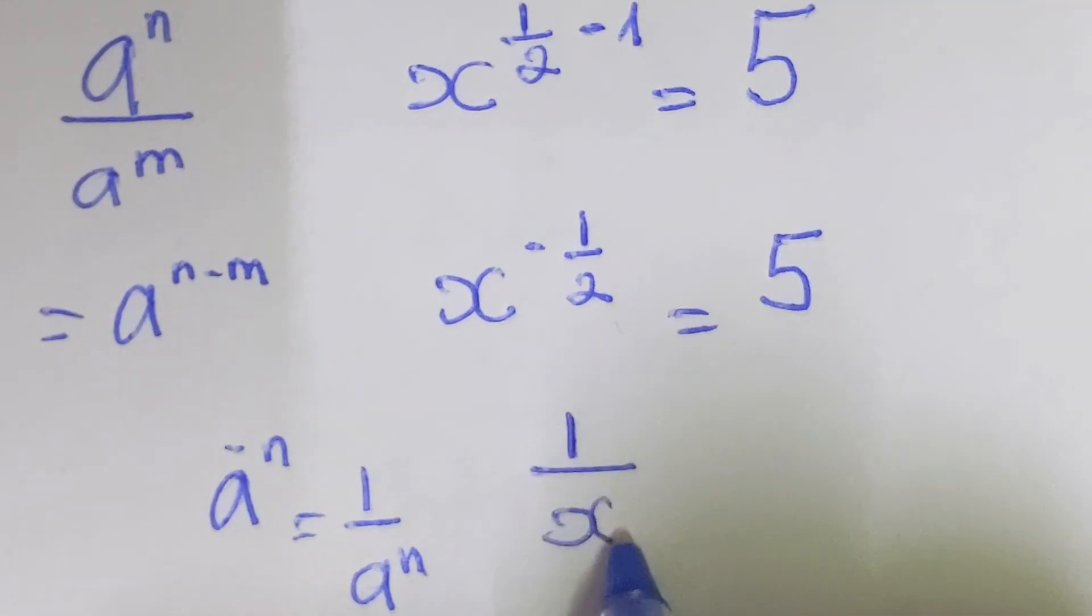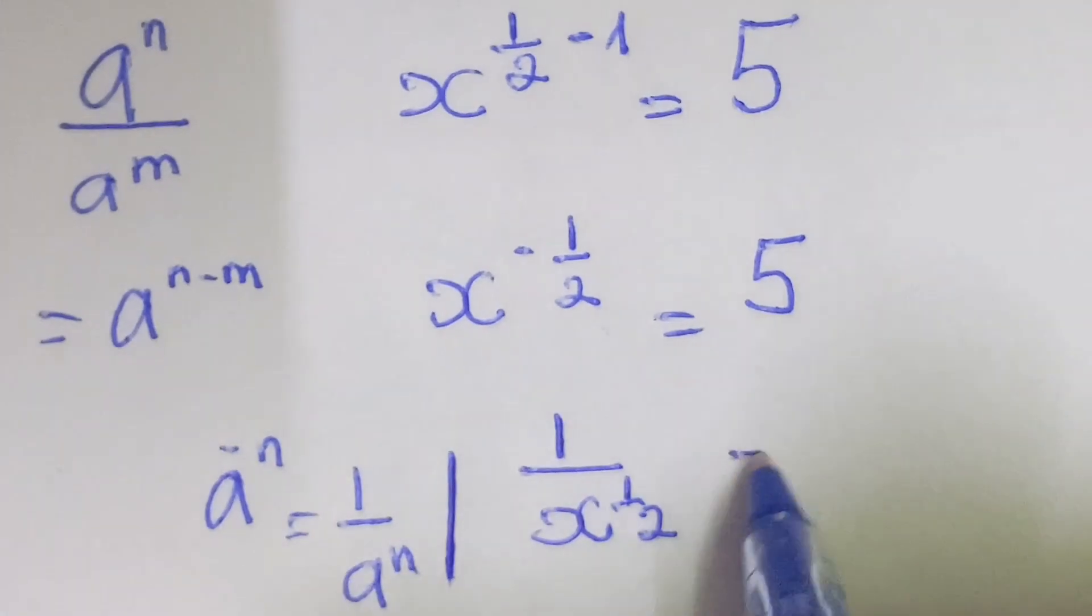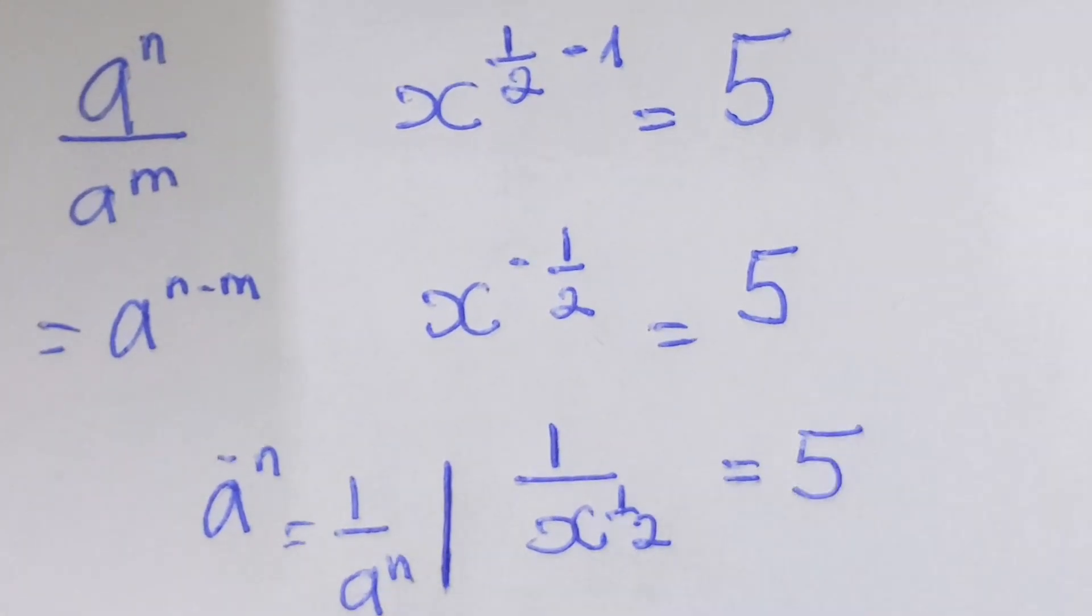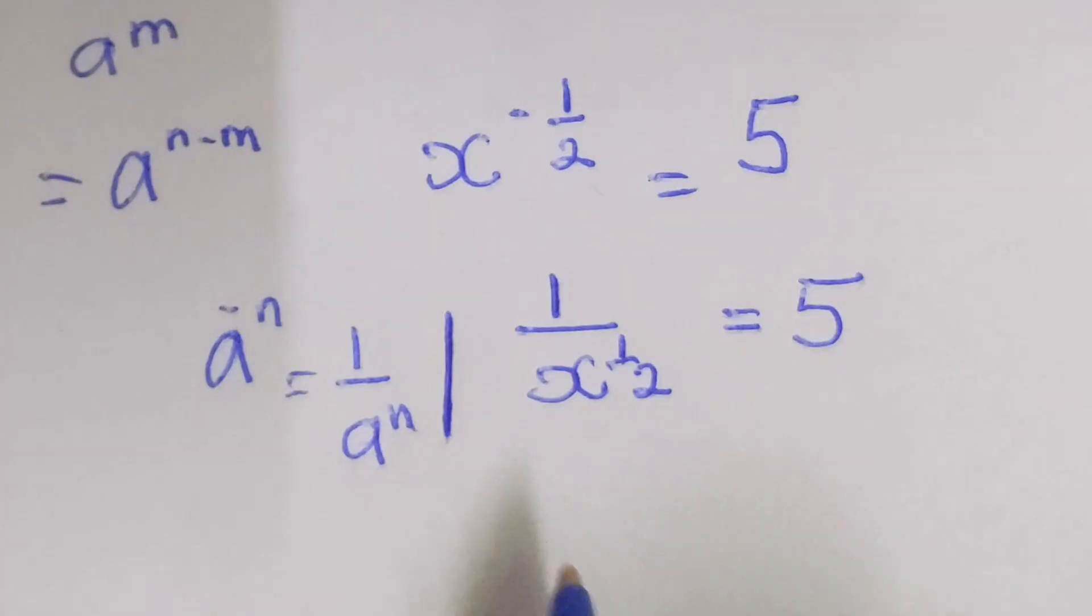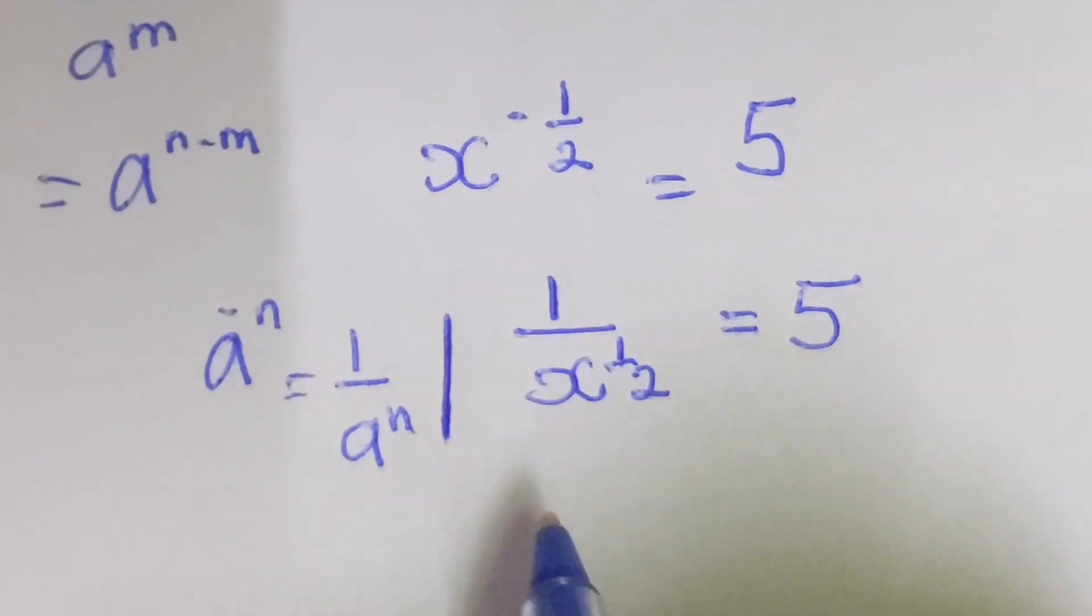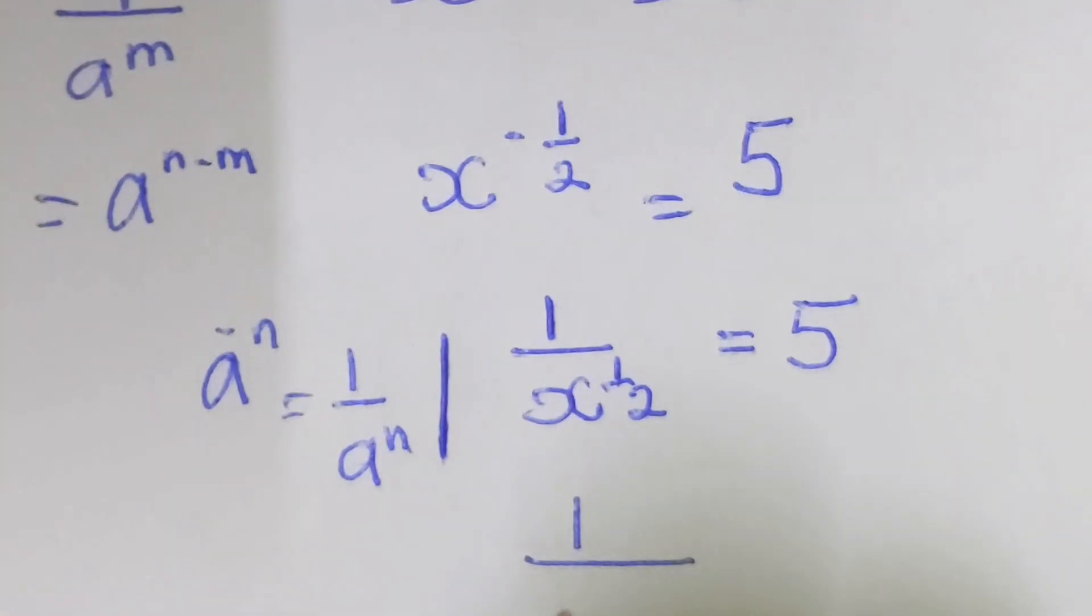Then what we have: we have 1 over x power 1 over 2 equal to 5.